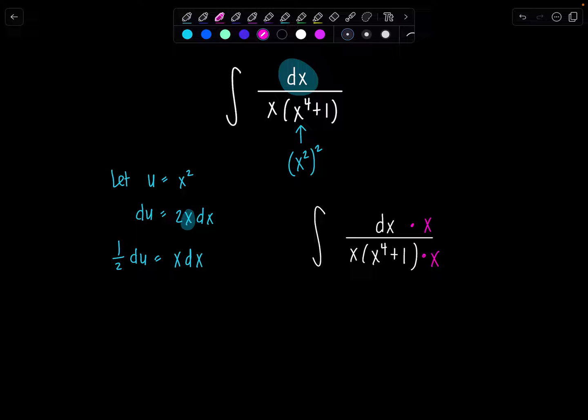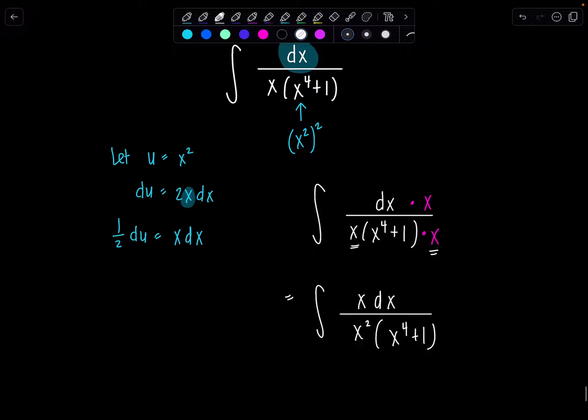Okay, let me clean up then a bit more before we do the u sub. I'm going to have x dx upstairs. And then I can combine those two little x's here and write x squared, x to the fourth, plus 1. And now I'm ready to do my u sub. It's going to work out beautifully.